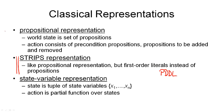Now, in the propositional representation, a world state is simply a set of proposition symbols. As opposed to first-order literals, symbols don't have an internal structure. The actions in the propositional representation consist of preconditioned propositions, propositions to be added, and propositions to be removed. The propositions to be added are the positive effects, and the propositions to be removed are the negative effects. The preconditioned propositions correspond to the positive preconditions in the STRIPS representation.